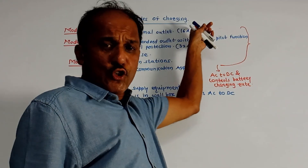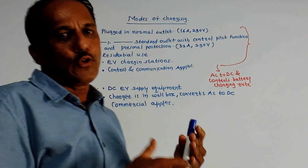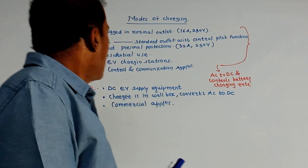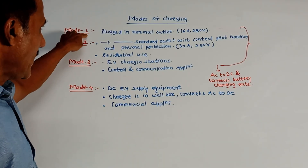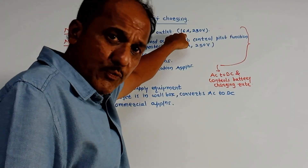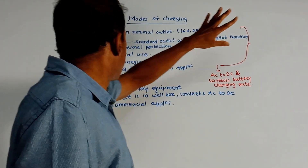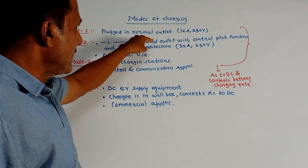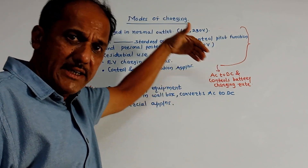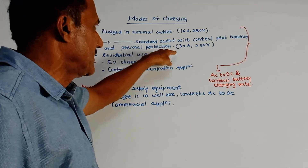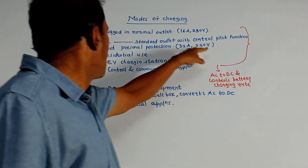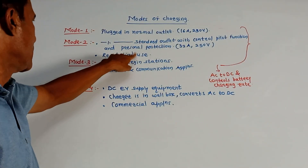The next part is modes of charging of EV batteries. You may expect exam questions on the different modes of charging an EV. There are basically four modes. Mode 1 is plugged into a normal outlet; specifications for single phase are 16 amperes and 230 volts. Mode 2 is plugged into a standard outlet with a control pilot function and includes a personal protection system; specifications for single phase are 32 amperes and 250 volts, and it is usually preferred for residential use.